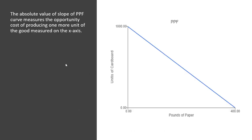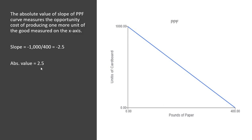Another example of slope in economics: the absolute value of the slope of the PPF (production possibilities frontier) measures opportunity cost for producing one more unit of the good measured on the x-axis. The rise here is minus 1,000 (falling from 1,000 to 0), and the run is 400 (pounds of paper increasing by 400). So minus 1,000 divided by 400 gives a slope of minus 2.5 — every pound of paper produced means giving up 2.5 units of cardboard. The absolute value is 2.5.